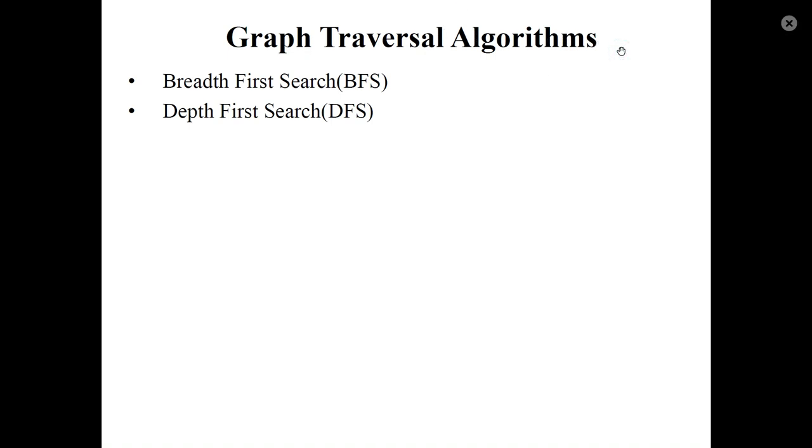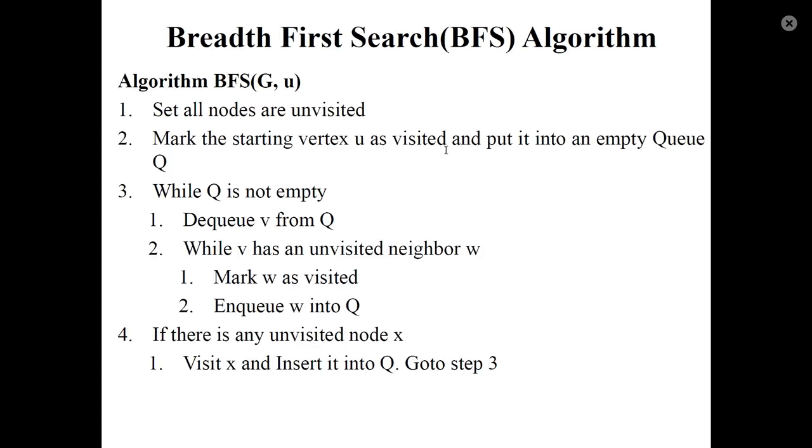Graph traversal algorithms. There are two algorithms: breadth-first search and depth-first search. The first one is breadth-first search algorithm, or BFS algorithm. Here, initially, set all nodes as unvisited. Then, here we have an empty queue.